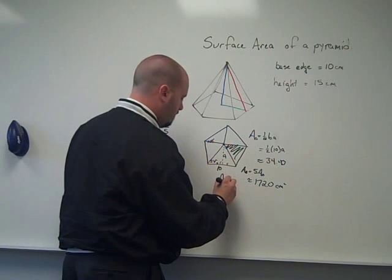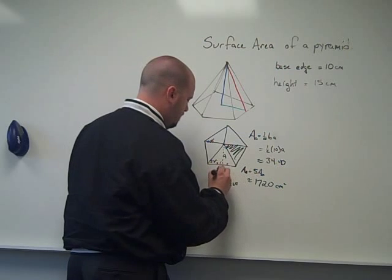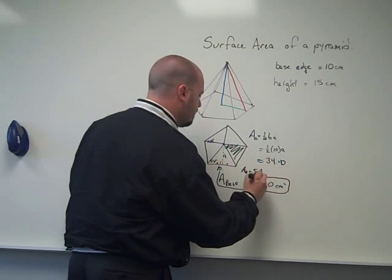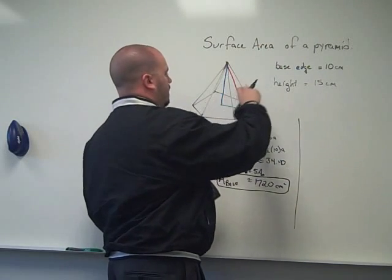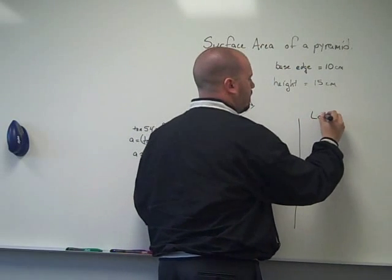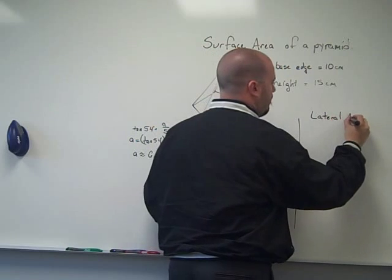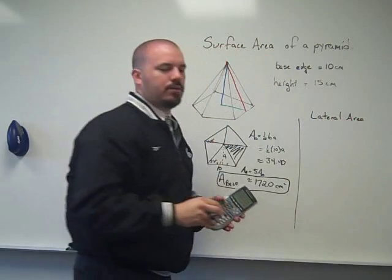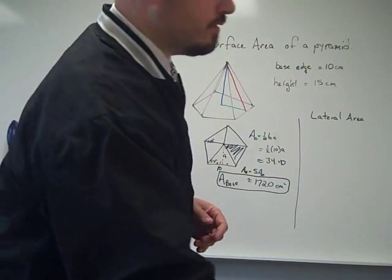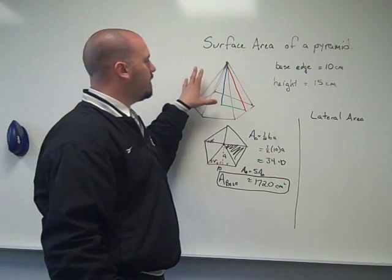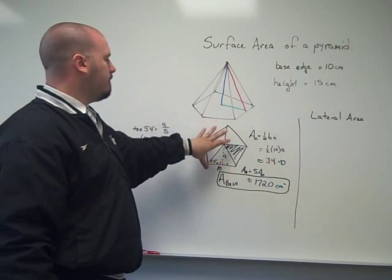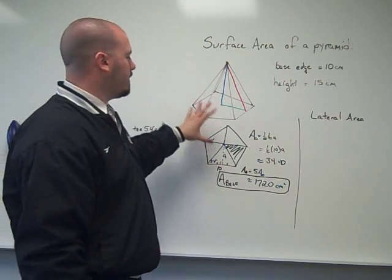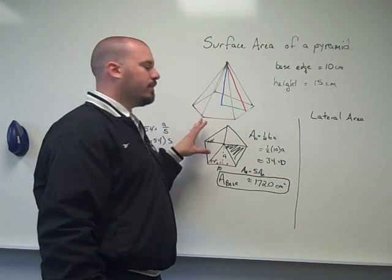And now what I need to do is find the lateral area. The lateral area is made up of 5 triangles. All of these triangles in this pyramid, it's a right pyramid, regular pyramid, regular pentagon, I didn't mention it at the beginning, but that's what I'm working with, a regular pentagonal pyramid.